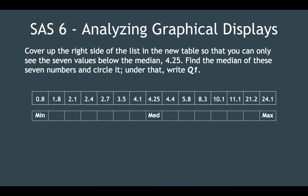Now let's cover up the right side of the list so you can only see seven values below the median, 4.25. Find the median of these seven numbers and circle it, and write Q1 below it. Counting the seven values on the left side, that middle value is 2.4. We're not talking about the values on the other side, just the values on this side of 4.25. That value 2.4 is your Q1. We'll explain what Q1 stands for in a minute.